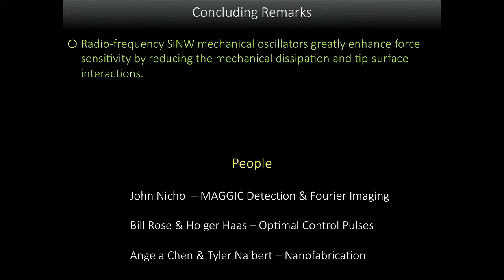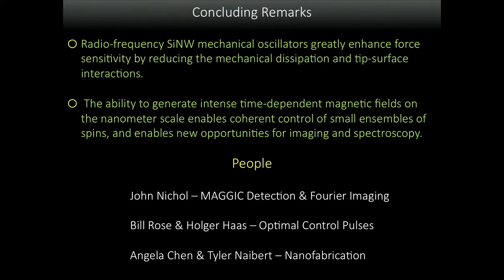Let me end here. I hope I've demonstrated that radio frequency silicon nanowire mechanical oscillators greatly enhance force sensitivity by reducing the dissipation and allow us to do some very sensitive measurements. This ability to generate these intense time dependent magnetic fields has been quite interesting because we are now at the point where we can generate 10 to the sixth tesla per meter field gradients. The last data set I showed you, the peak gradients were 1 by 10 to the sixth. We're really creeping up on what conventional ferromagnets can do. But moreover, it allows us to control these fields in time, which gives you a lot of opportunities for doing spectroscopy and imaging on the nanoscale.